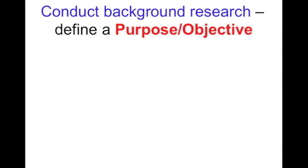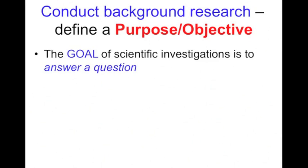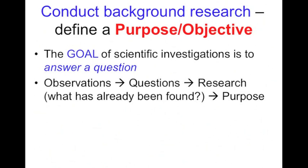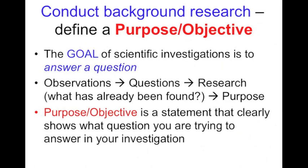Step two of the scientific method is we need to conduct some background research, and we're going to use that research to define a purpose or objective in our lab report or in our investigation. The purpose and objective is going to be the goal of our investigation. In general, the goal of investigations is to answer some sort of question. We're going to use observations, ask questions, and conduct research to see what's already been found. Then we're going to find a purpose statement for our lab to go from there. This will be a statement that clearly shows what question you're trying to answer in your investigation, and we want it to be something that someone else hasn't already tried to answer.